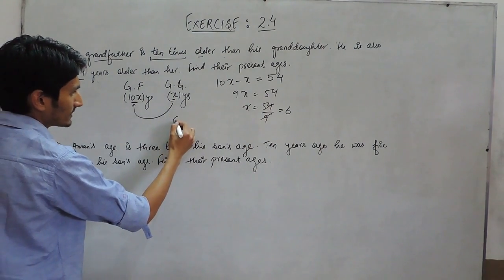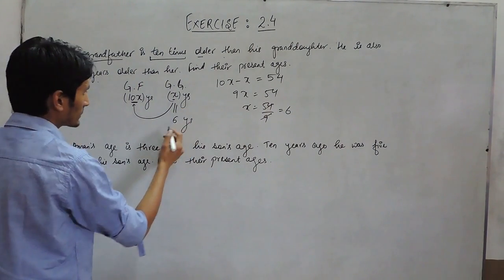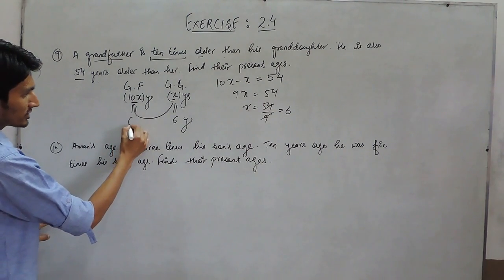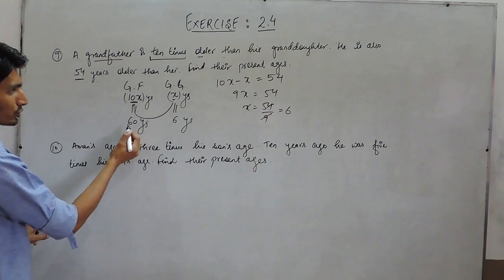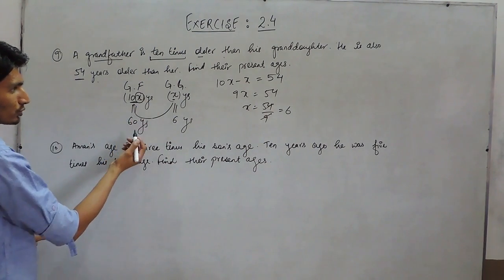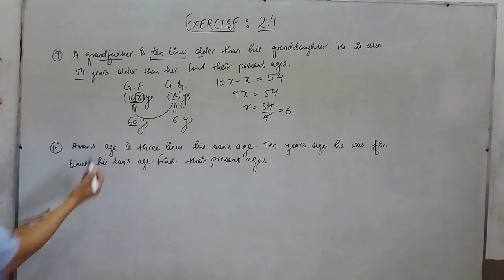So, the age of granddaughter is 6 years because x is equal to 6. And age of grandfather must be 60 years because his age is 10x. Putting x equal to 6, 10 times 6 is equal to 60.